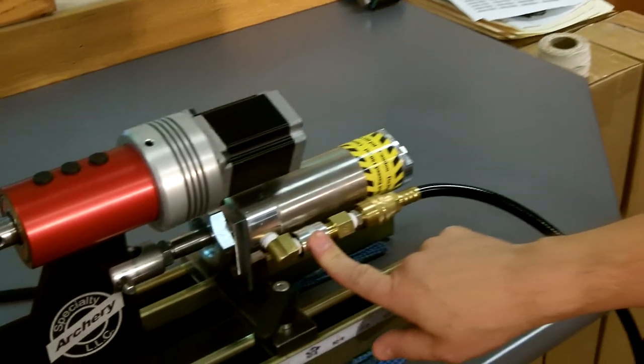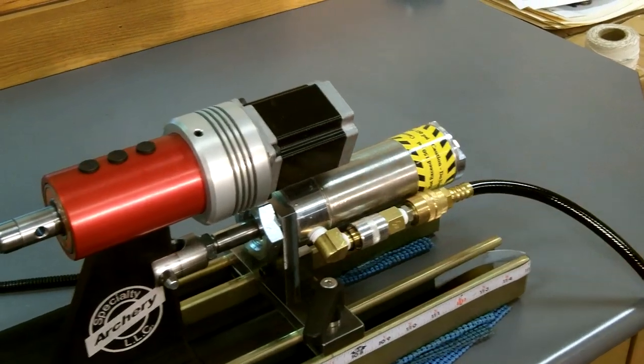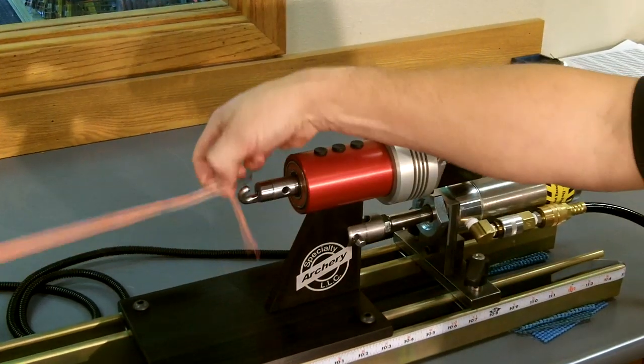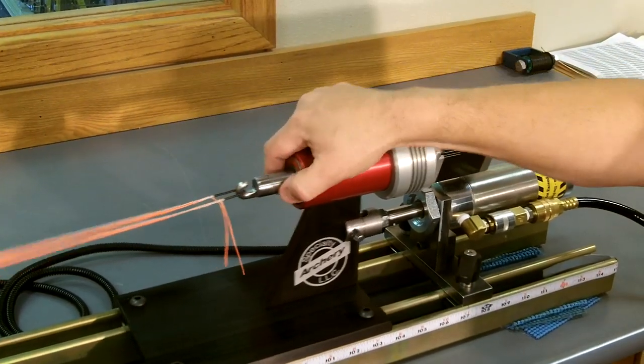To release the tension on the string, all you simply do is move the on-and-off valve to that position, and now your string is ready to take off. Now we're going to twist our string.